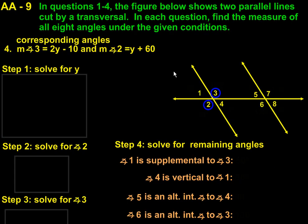Now we'll take a look at question number four. The directions state that in questions one through four, the figure below shows two parallel lines cut by a transversal. In each question, find the measure of all eight angles under the given conditions.